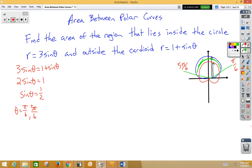Our formula, the standard formula, is A equals 1 half integral from alpha to beta of outer r squared minus inner r squared d theta.